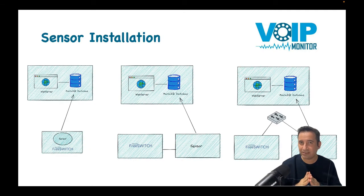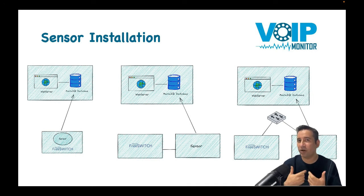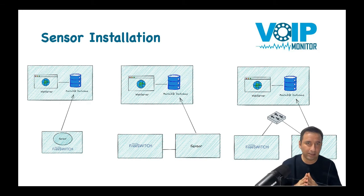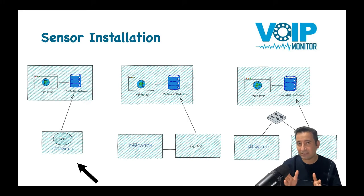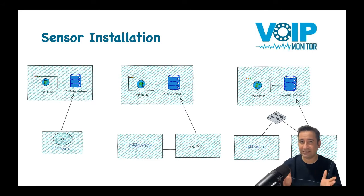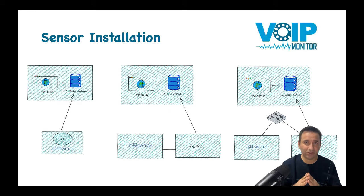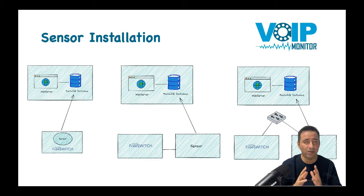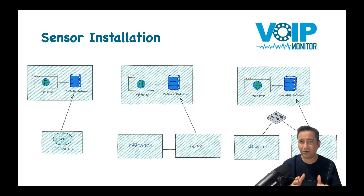Before we jump into the installation steps, I want to recap the different installation modes that we can use for VoIP Monitor sniffer in our telephony network. In the first method, the sensor will be installed on our telephony system or PBX. This is the simplest method, but it has its own downsides. For example, if you have FreeSWITCH, Asterisk, or Kamailio, you can install the sensor on the same Linux box as your telephone system.